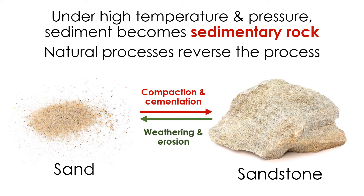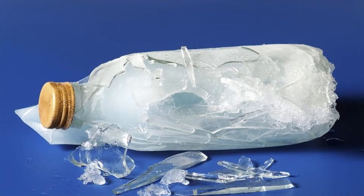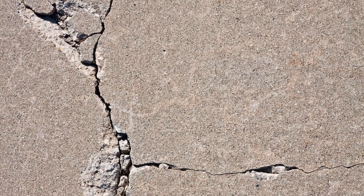The opposite of compaction and cementation are weathering and erosion, which destroy sedimentary rocks. Weathering is the process that breaks a sedimentary rock down into smaller pieces — it's a lot like the process that causes potholes and cracks in sidewalks to form in winter. Water seeps down into the road or sidewalk and freezes; because water expands when it freezes, it exerts a force that causes the surface to fracture and break.